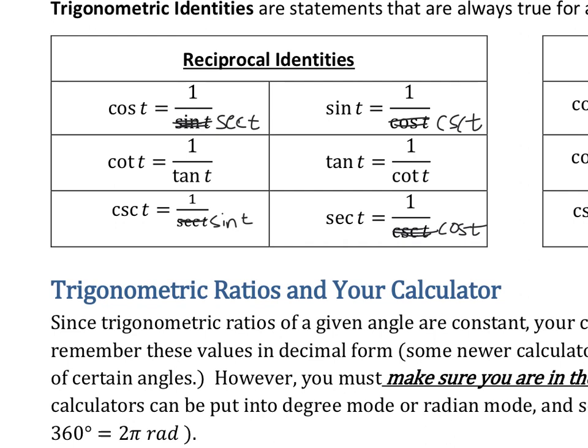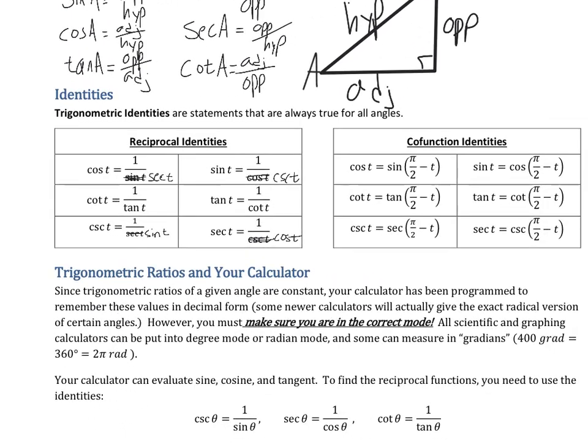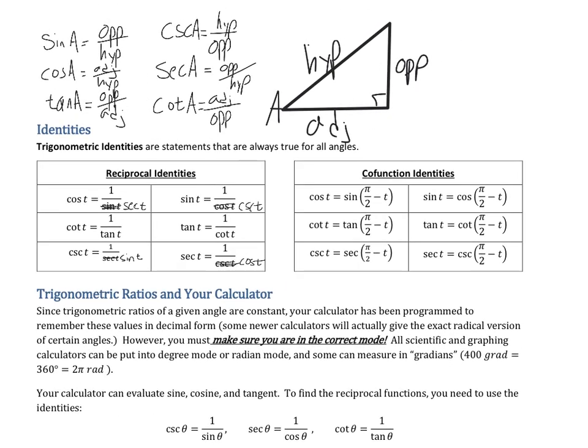So those are called the reciprocal identities. When we put it one over a fraction, it just flips it. We'll see this more. Also, we can see that the cosine of an angle is just the sine of the other angle in the right triangle. In other words, the cosine of this angle A is the same as the sine of this other angle over here, because the adjacent of A becomes the opposite of B or whatever angle this is.